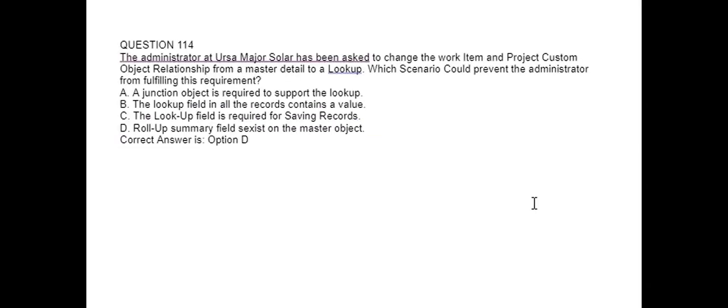Next question. The administrator at URSA Major Solar has been asked to change the work item and project custom object relationship from a master-detail to a lookup. Which scenario could prevent the administrator from fulfilling this requirement? Option A: A junction object is required to support the lookup. Option B: The lookup field in all the records contains a value. Option C: The lookup field is required for saving records. Option D: Roll-up summary fields exist on the master object. Correct answer is Option D.